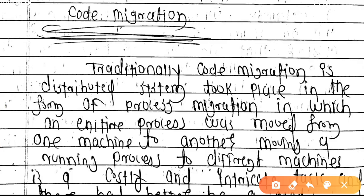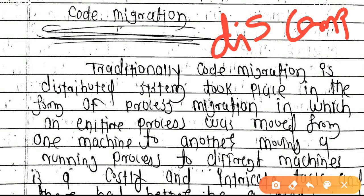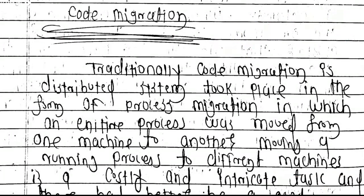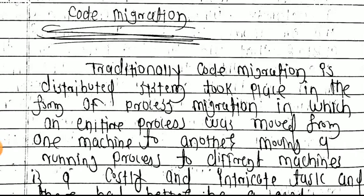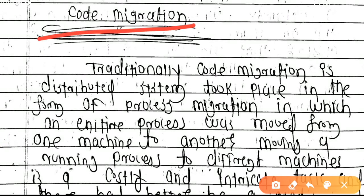Today in this video series on distributed systems, we will talk about code migration. What is meant by code migration? Traditionally, code migration in distributed systems took place in the form of process migration, in which an entire process was moved from one machine to another machine.